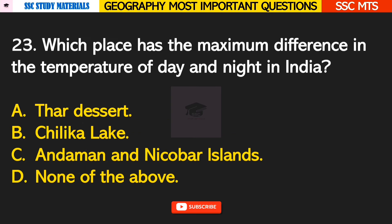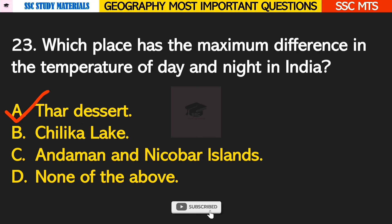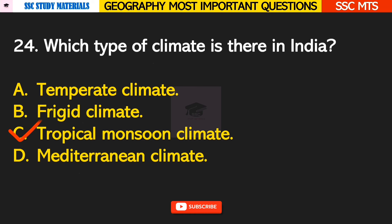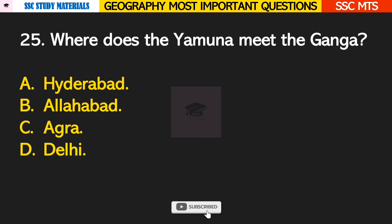Question number 23: which place has the maximum difference in temperature of day and night in India? Answer A — Thar Desert. Question number 24: which type of climate is there in India?